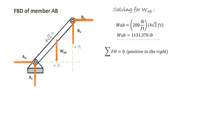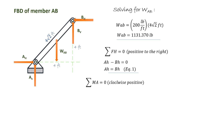Let's take a summation of forces along the horizontal axis, considering positive to the right. So AH minus BH equals zero, therefore AH equals BH — we'll call that Equation 1. Next, let's take a summation of moments about pin A in order to eliminate the forces AH and AV.